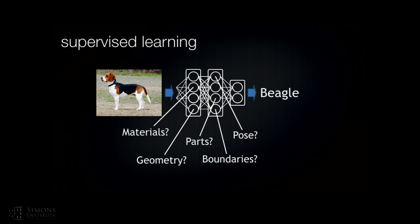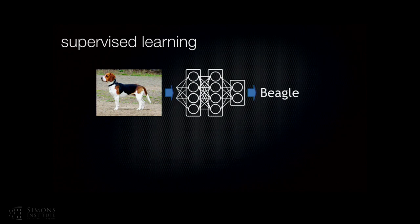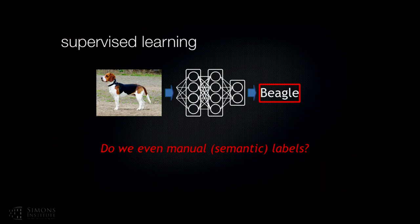This raises an interesting question: is there something peculiar about this semantic task — given an image, try to predict the label — that helps you learn this representation? Or can we actually learn this representation without using any semantic or manual labels at all, and still have it be transferable to other tasks? Because if we can get rid of manual labels, then we can scale up learning to billions of images.